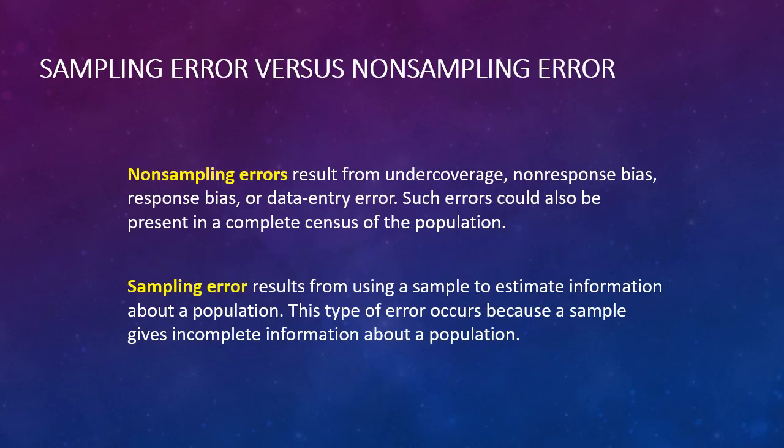Finally, there's sampling error versus non-sampling error. Non-sampling errors result from under coverage, non-response bias, response bias, or data entry error, as we've already gone through. Such errors could also be present in a complete census of the population. Sampling errors occur. These result from using a sample to estimate information about a population. This type of error occurs because a sample gives incomplete information about a population. You can think of sampling error as error that results from using a subset of the population to describe the characteristics of the whole population, whereas non-sampling error is an error that results from obtaining and recording the information collected.